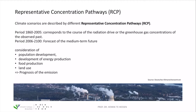The pathways consider whether mankind will rely on fossil fuels, what type of fossil fuel will be used, whether there will be a transformation to renewables in electricity production, heat production, and the transportation sector. Food production and land use — in particular the fate of the rainforest — are also considered. This information is used to predict emissions and derive the greenhouse gas concentration in the atmosphere within the next decades and until the end of the century, giving us the RCPs to use in computer simulations.